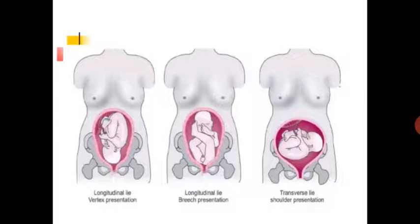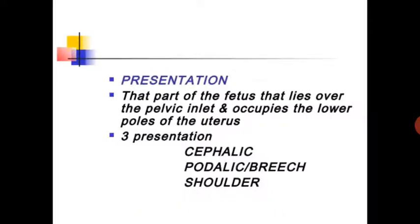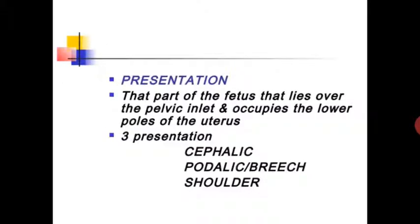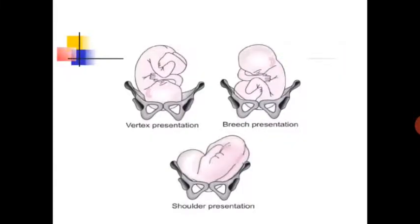In longitudinal lie we get cephalic or breech presentation. In transverse lie we get shoulder presentation. Presentation is defined as that part of the fetus that lies over the pelvic inlet and occupies the lower pole of the uterus. Three types of presentation are cephalic, podalic (breech), and shoulder.